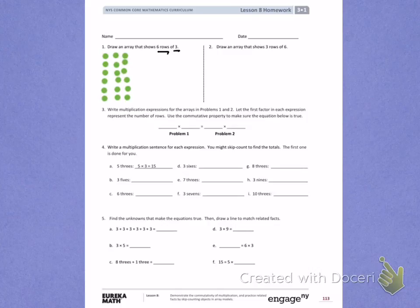I'm going to go back and count those rows of 3. 3, 6, 9, 12, 15, 18.